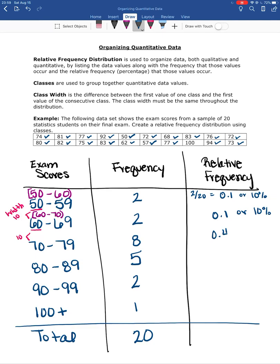That's going to be 0.1 or 10%, 0.1 or 10%, 0.4 or 40%, 0.25 or 25%, 0.1 or 10%, and 0.05 which is 5%. And then again, we want to sum this relative frequency column, make sure it sums to 1 or 100% or very, very close to that. If it's off by a tiny bit, that's okay.